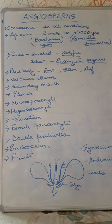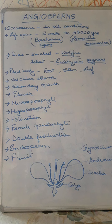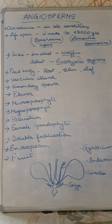These angiosperms are present in all types of conditions — in hot areas, colder areas, wet areas, and dry areas. They may be parasitic, saprophytic, marine, terrestrial, or epiphytic. As they are an advanced group, all types of plants and different varieties are observed. Their lifespan also varies from two weeks to 43,000 years.